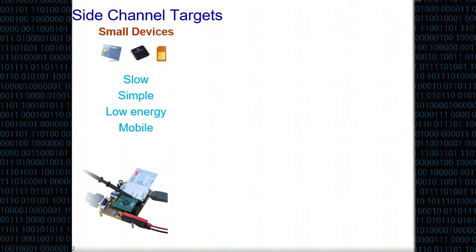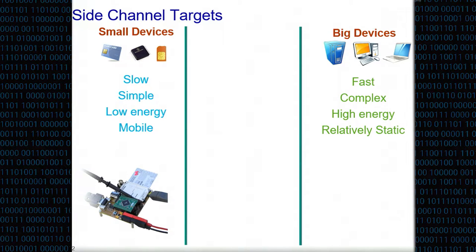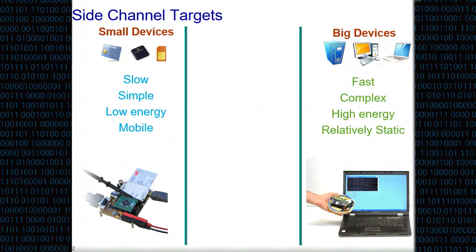We've gotten pretty good at this - we have 20 years of research about these attacks, thousands of papers, hundreds of different approaches. Only recently we've started exploring a completely different category of targets: what I call big devices - laptops, desktop, server computers. When it comes to side channel analysis, these devices are quite the opposite. They're very fast and very complex, running multi-gigahertz CPUs with billions of transistors, thousands of discrete components, and they use quite a bit of energy.